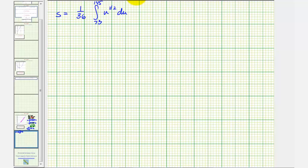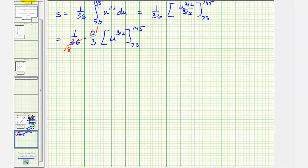So the anti-derivative of u to the 1 half with respect to u, we'd have u to the 3 halves divided by 3 halves. So we'd have 1 over 36, and then instead of dividing by 3 halves, we'd multiply by the reciprocal, so times 2 thirds. And we have u to the 3 halves. Notice how this product simplifies to 1 over 54. And then we have our anti-derivative, u to the 3 halves, which we'll now evaluate at 145, then 73, and then find the difference.